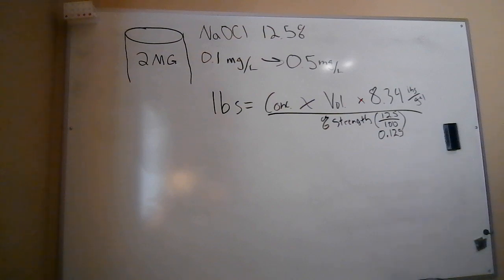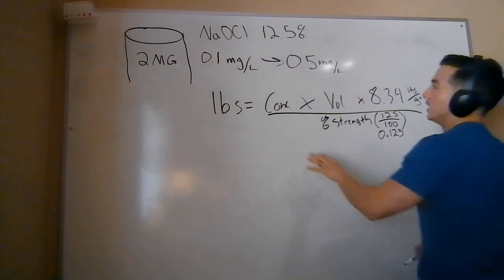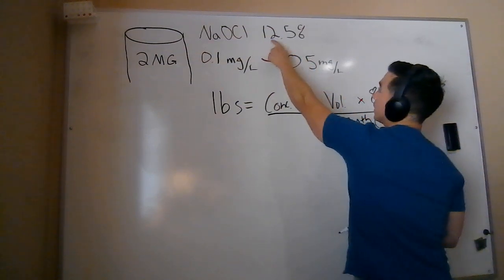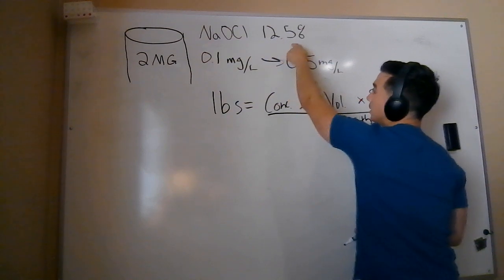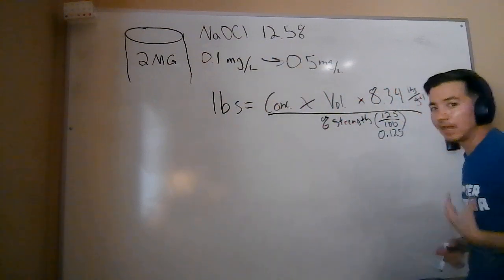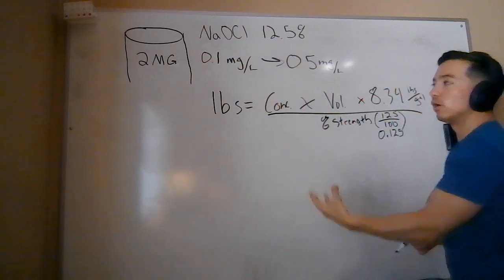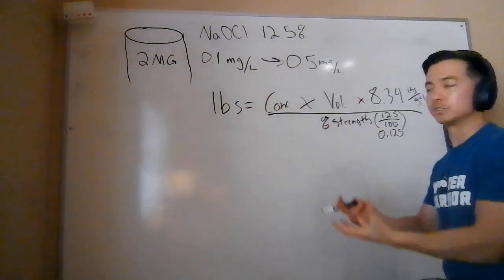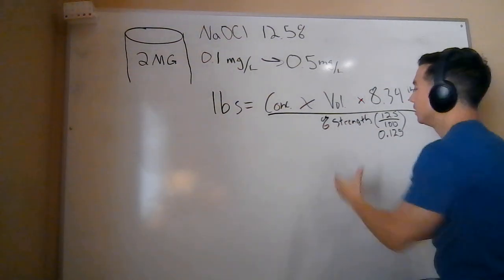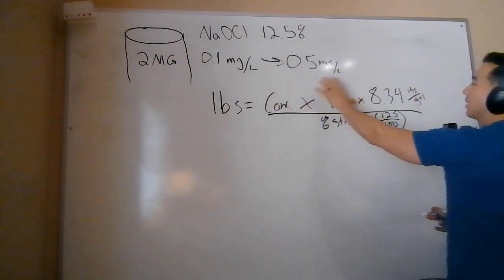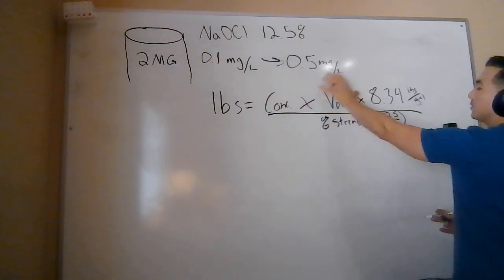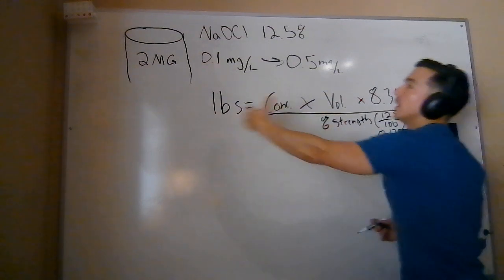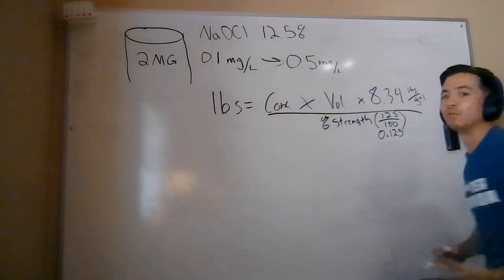Think about this logically. If we know that our disinfectant is only 12.5% chlorine, we're going to have to add a lot more of that than we would of, say, chlorine gas, which is 100%. So by taking our pounds formula and dividing by this little number, we're going to grow that number, which is what we want.